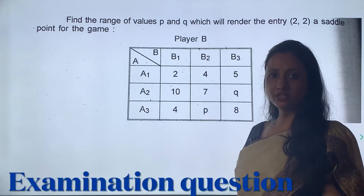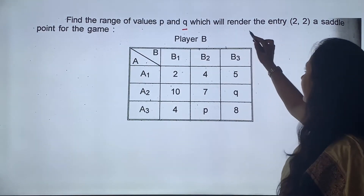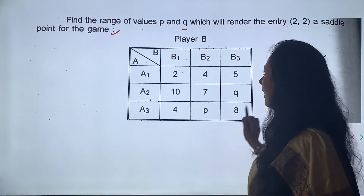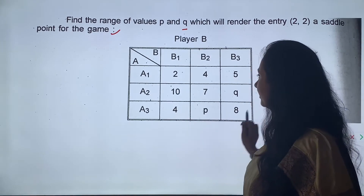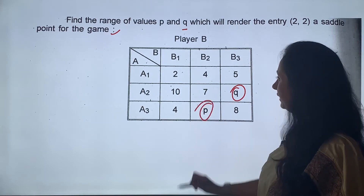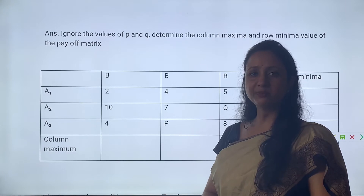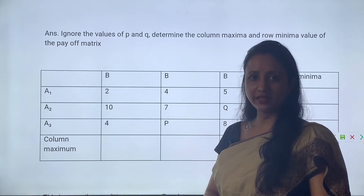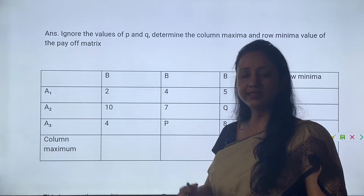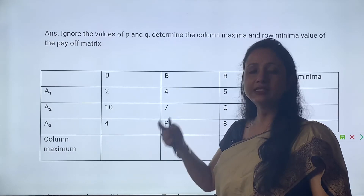Next examination question is: find the range of values P and Q which will render the entry (2,2) a saddle point for a game. अब आपको क्या करना है - ये payoff matrix given है जिसमें payoff given है, यहाँ पे Q है, यहाँ P है. Now we will solve the question. Look student - जब payoff matrix में P and Q values given हैं, तब उन P और Q की values को ignore करके same उसी pattern से question solve करना है जैसे हमने previous में use किया है।